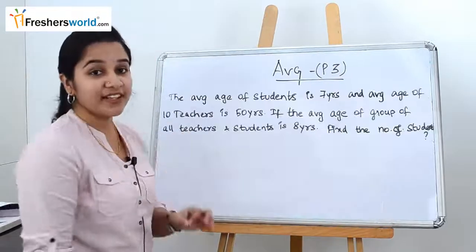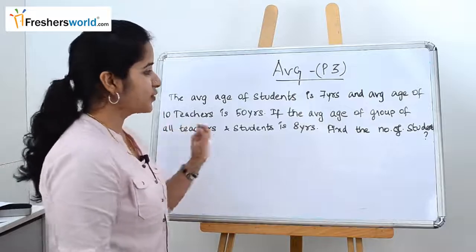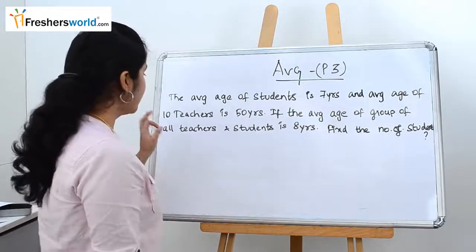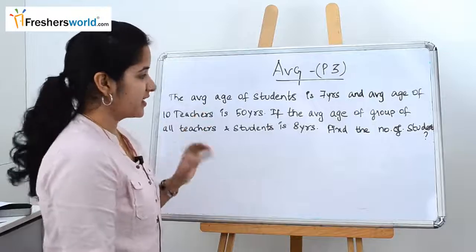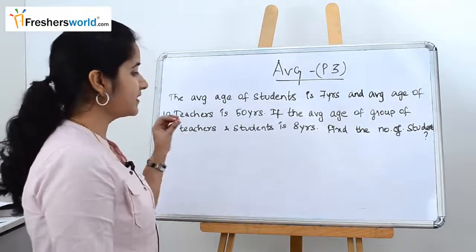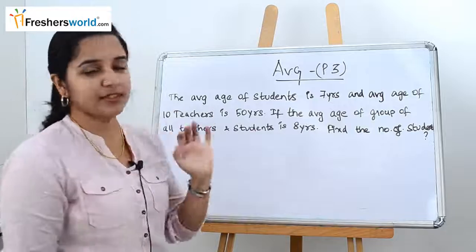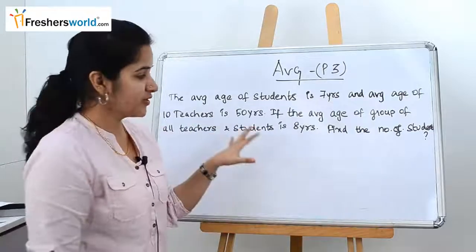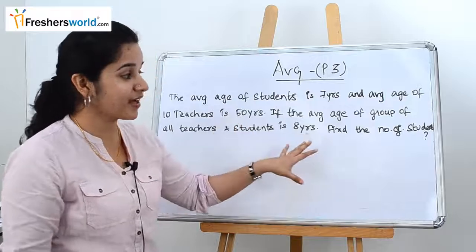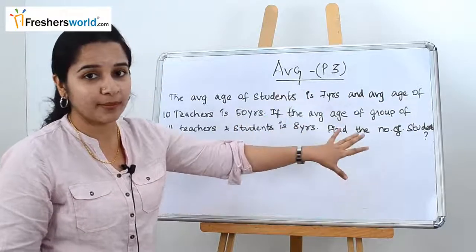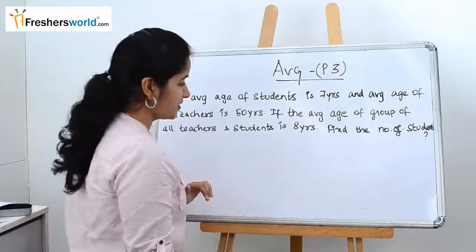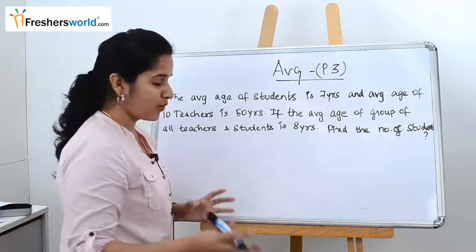Let's go to the next problem. The average age of students is 7 years and the average age of 10 teachers is 50 years. If the average age of the group of all teachers and students is 8 years, find the number of students. This problem is similar to the previous one. To form the equation we need to know the total number.